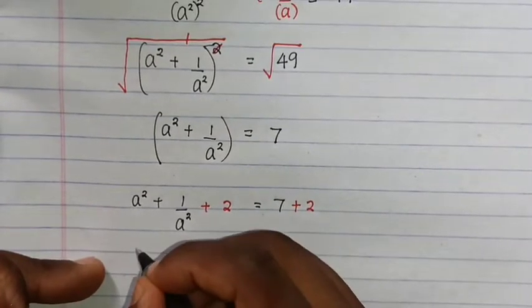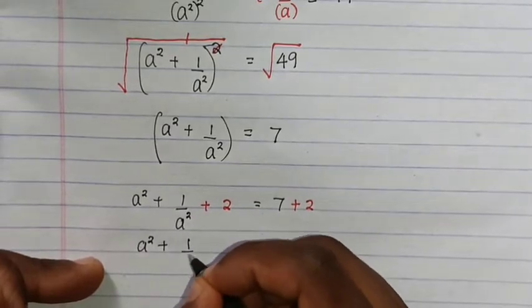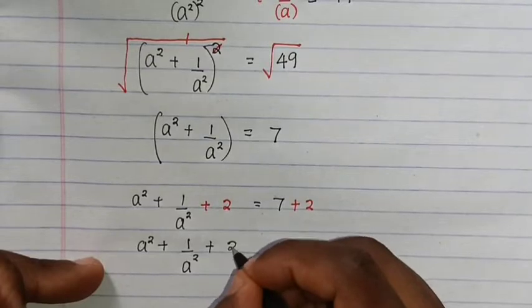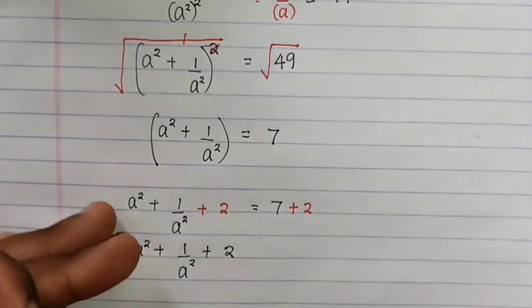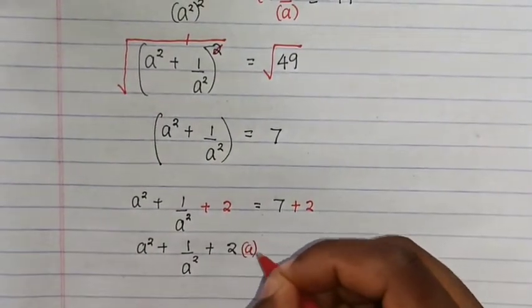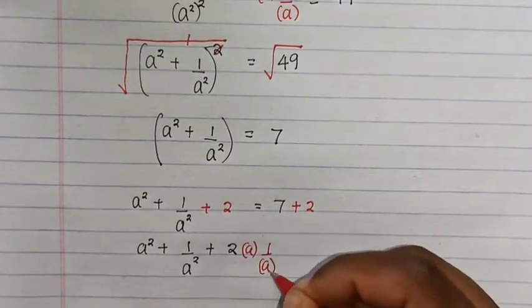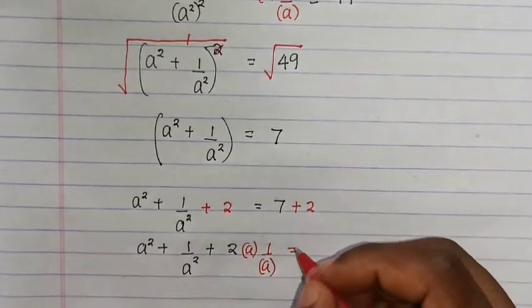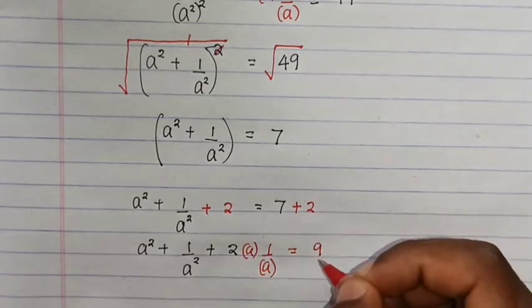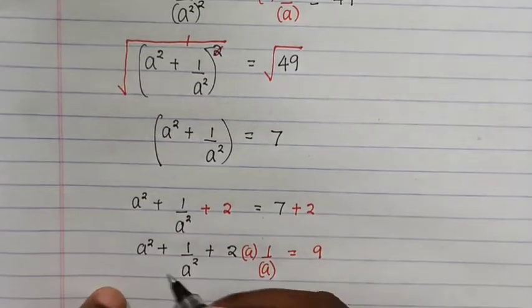Same as a squared plus a squared plus a squared plus a squared plus 2, and then here we put a one over a minus, and this is the same thing.